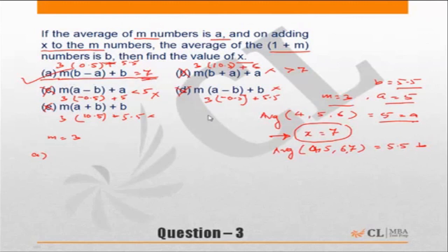Okay, I hope the method is clear. I took 3 numbers. You could have done the question with 2 numbers also. Instead of taking 4, 5, 6, you could have just taken 4 and 5 and solved the question accordingly.